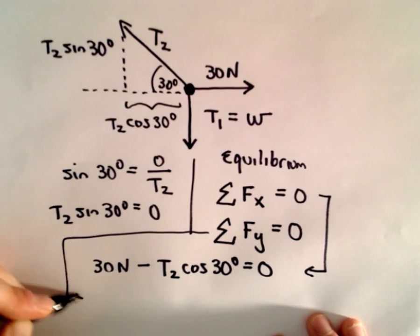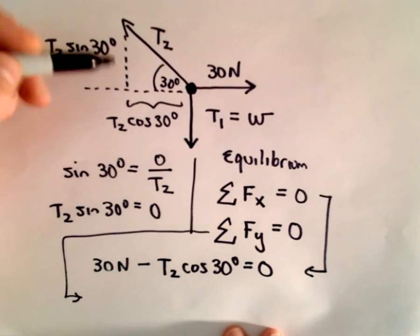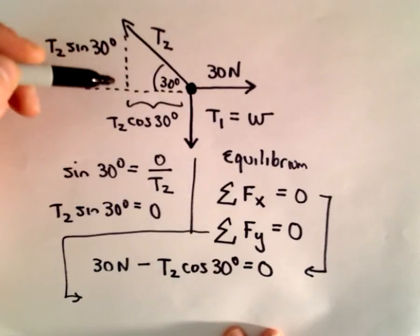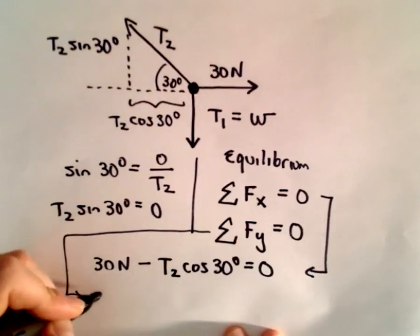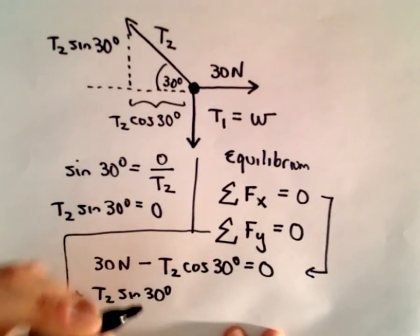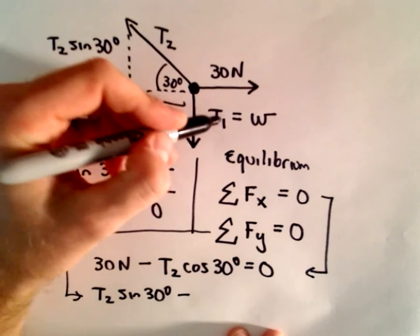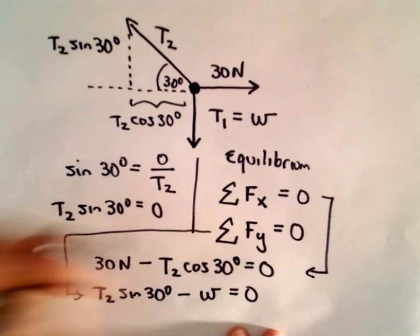And then, if we sum up the forces in the vertical direction, that's also going to be zero. So, again, we'll just make, you know, upwards positive. So, in this case, we have T2 times sine of 30 degrees. And, in this case, we would have to subtract away W. And, again, that's going to equal zero.